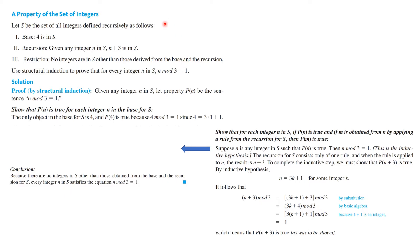Suppose S is the set of all integers defined recursively as follows: 4 is in S, and given any integer n in S, n plus 3 is also in S. No integers are in S other than those derived from the base and the recursion. We use structural induction to prove that for every integer n in S, n mod 3 is equal to 1 — meaning when you divide n by 3, the remainder is 1. We'll do a proof by structural induction.